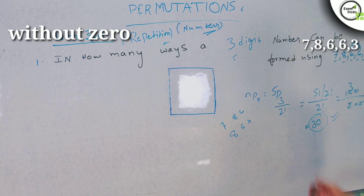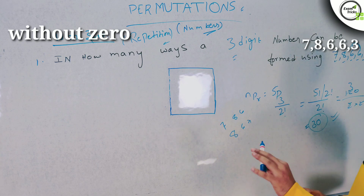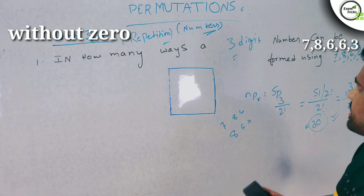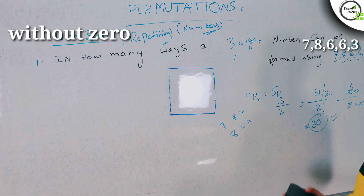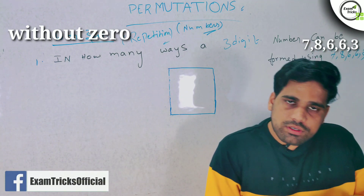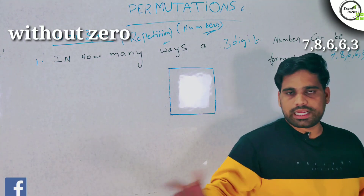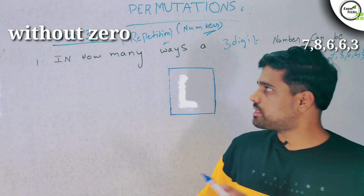Next we will talk about the concept of numbers with 0. When 0 is included in the digits, we handle it differently depending on whether repetition is allowed or not. Now we will cover the case without repetition involving 0.